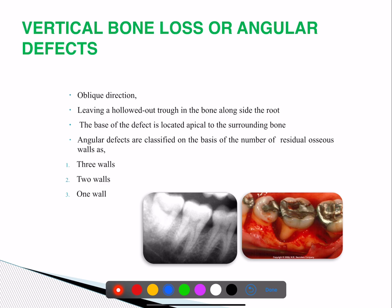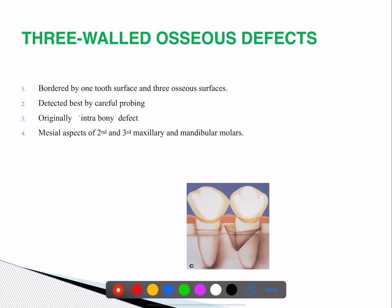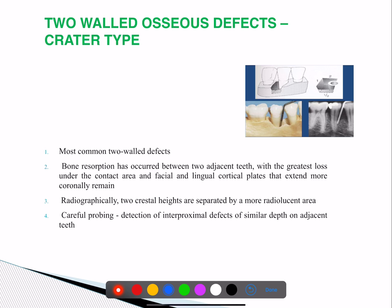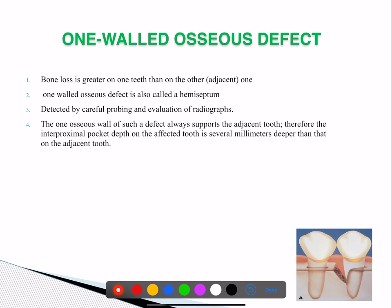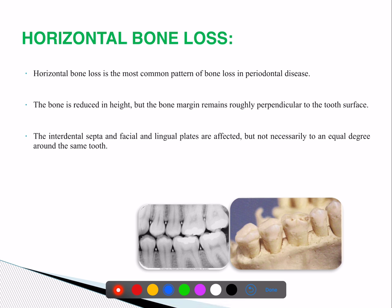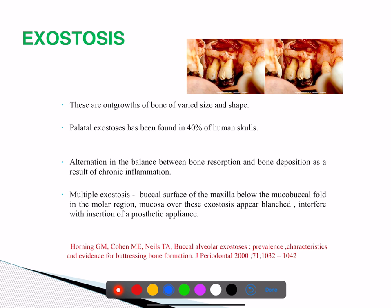Vertical bone losses include angular defects: three-wall, two-wall, and one-wall, also known as intrabony defects. These are most commonly seen on mesial aspects of second and third maxillary and mandibular molars. Two-wall defects are most commonly craters — with a buccal wall and lingual wall visible in cross-section. Horizontal defects show equal bone loss overall and are mostly associated with suprabony pockets.